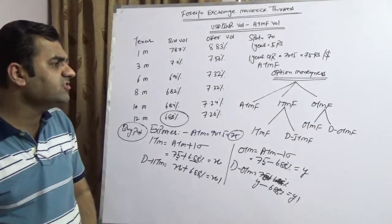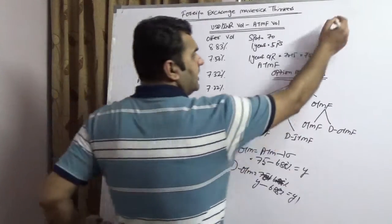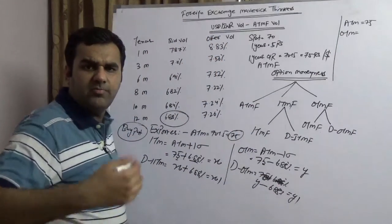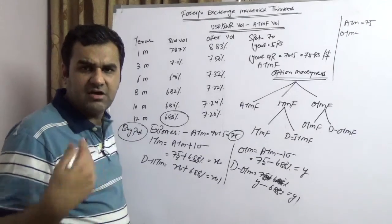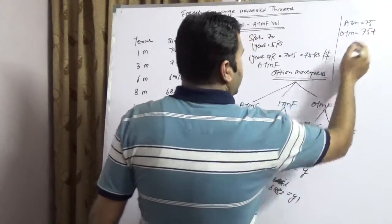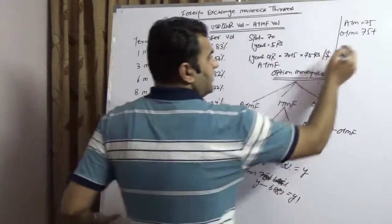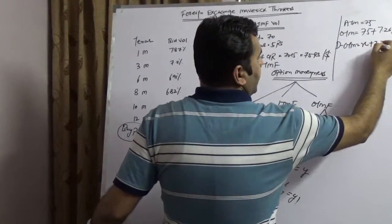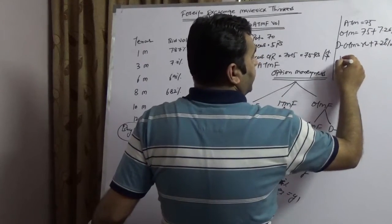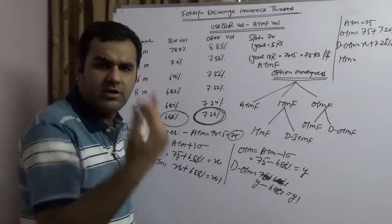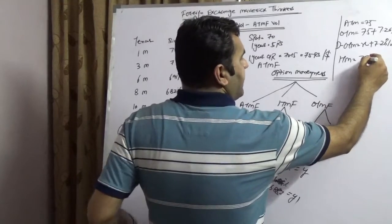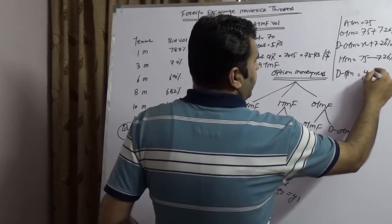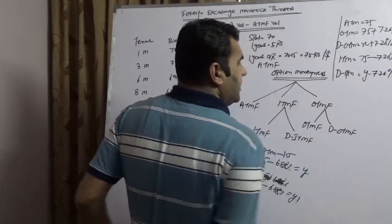In case of an importer, at the money would be same which is 75. What would be out of the money? Market is available at 75 and you want to buy at higher, say 80 or 85. This is out of the money. So market is available at 75 and you want to buy higher which is 75 plus 7.26 percent. Deep out of the money is X plus 7.26 percent which is X1. In the money means market is available at 75, you want to buy at lower, so which is 75 minus 7.26 percent which is Y. Deep in the money is Y minus 7.26 percent which is Y1.